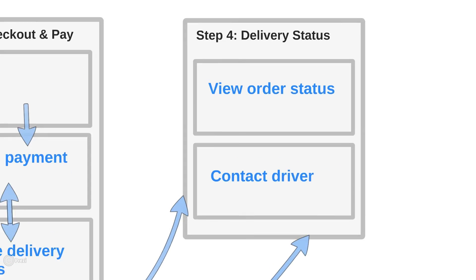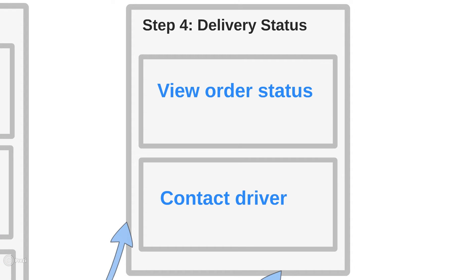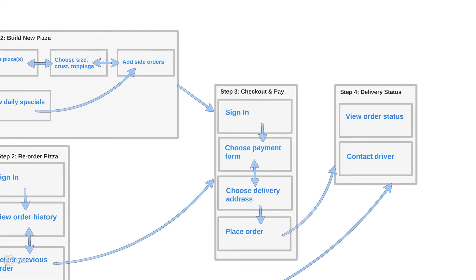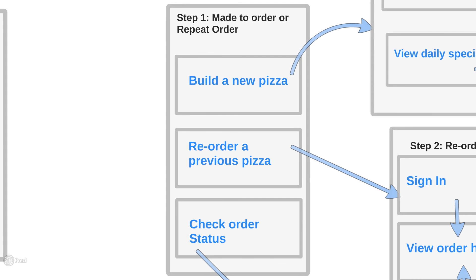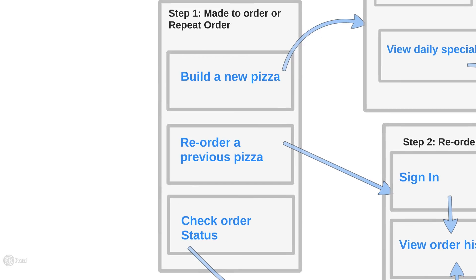Once Debbie's placed her order, she'll see the order status, and if she has a question about her order, she can contact the driver. Now let's say that Debbie placed an order for a pizza a couple of days ago. She liked the pizza and the app, and she's come back to reorder the same thing again. This is where she would select option two, which is reorder previous pizza.